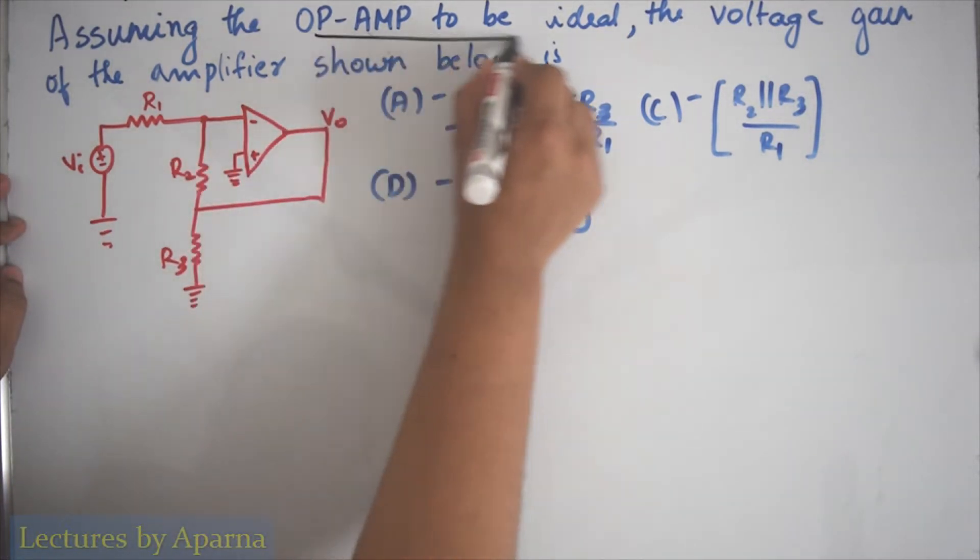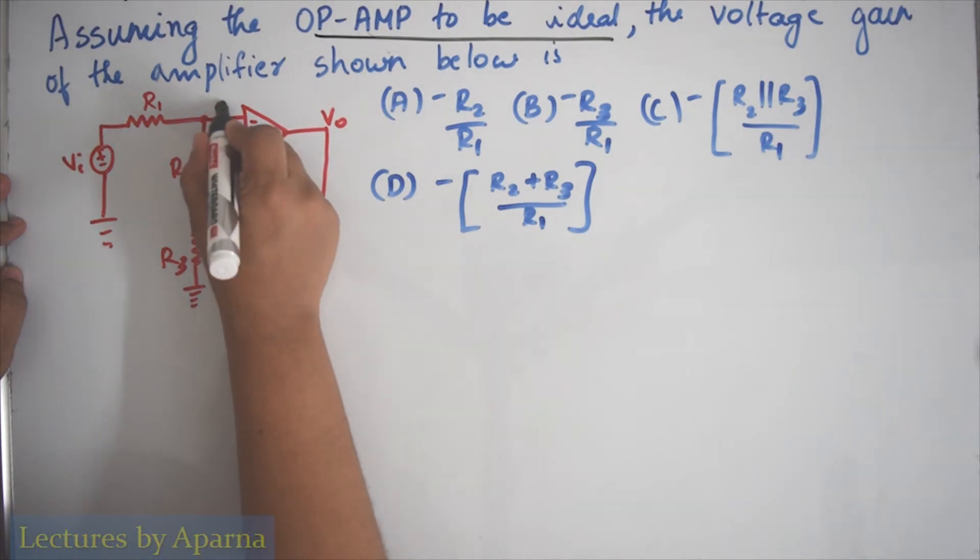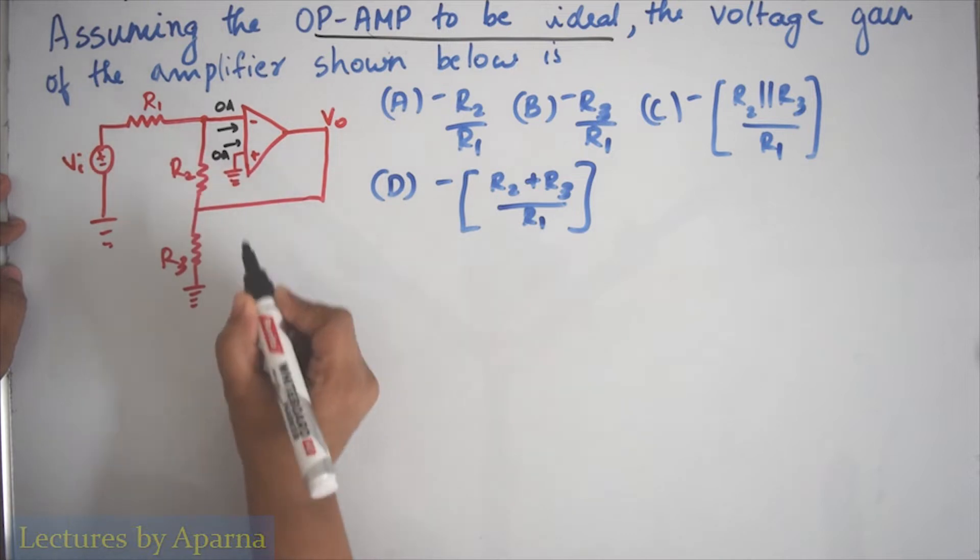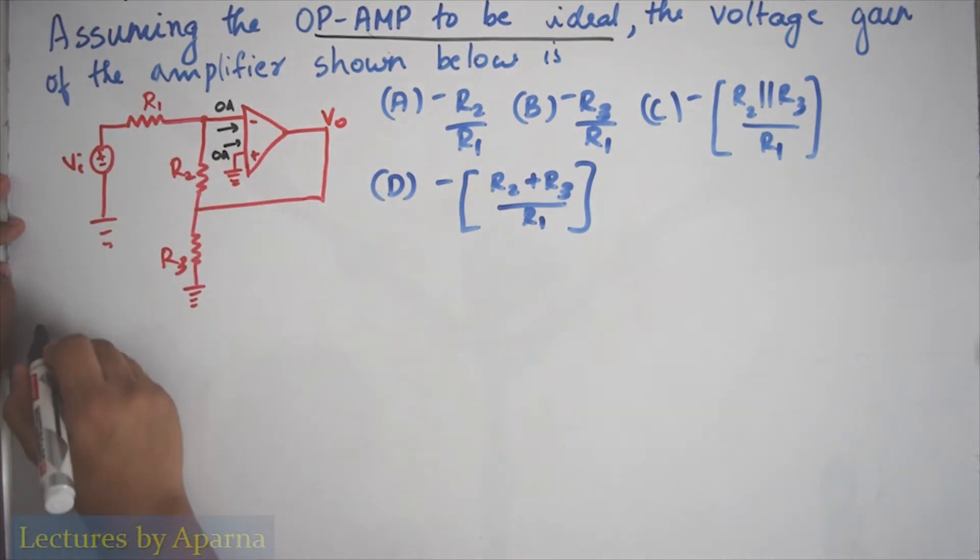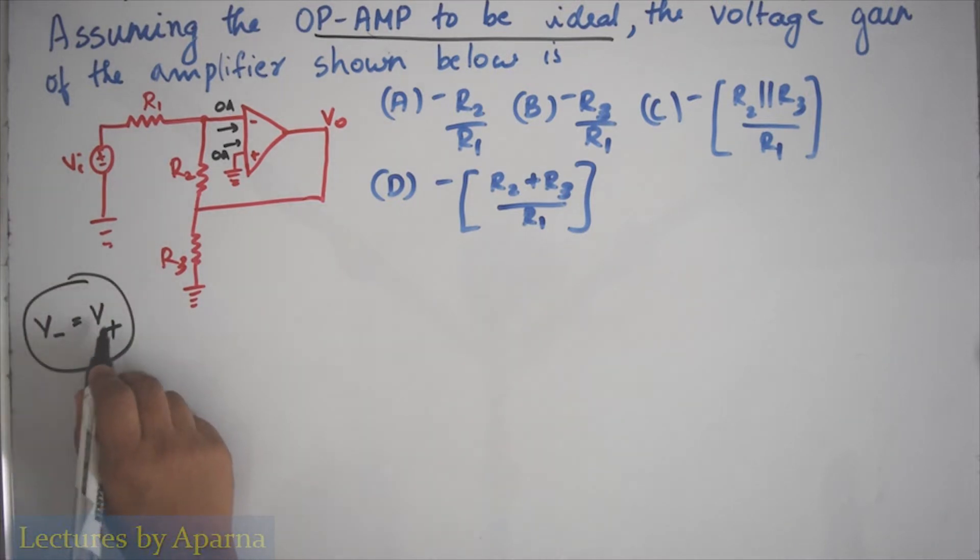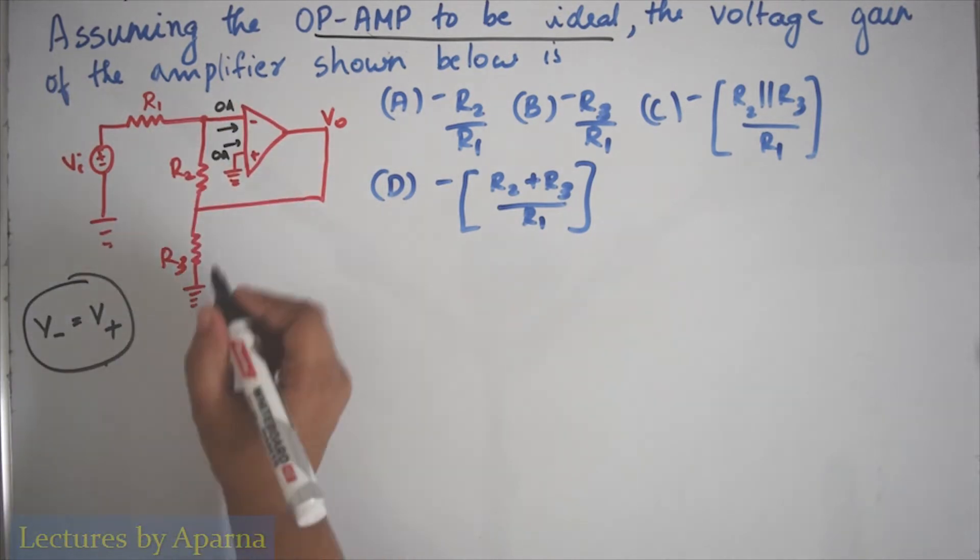Since the op-amp is ideal, the current entering the two inputs of the op-amp is 0 ampere. Also, we are assuming the voltage at the non-inverting terminal is equal to the voltage at the inverting terminal. Remembering these two conditions, let's start the analysis.